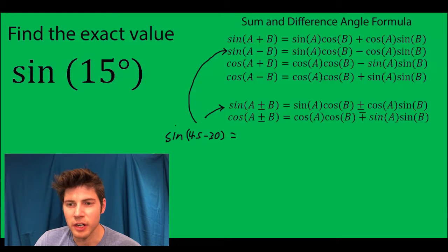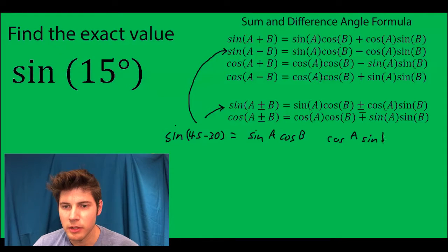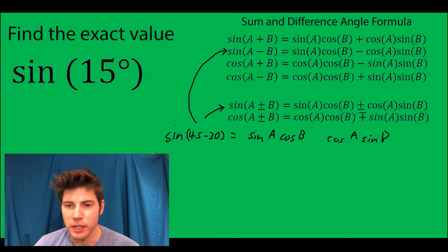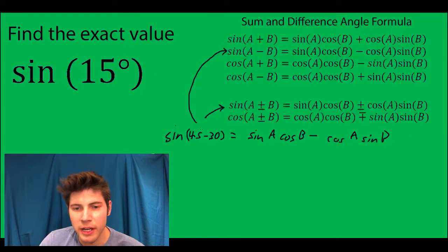So it's going to be sin cos cos sin and it just goes A B A B. And when that's a minus, this is a minus, so there it is. My A is going to be 45, my B is going to be 30.